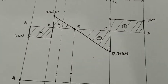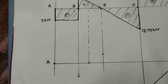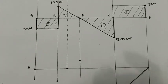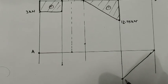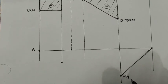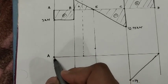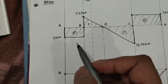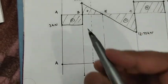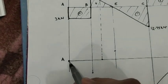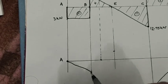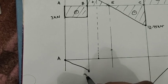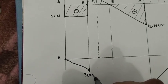Writing in the bending moment values: the bending moment at C is minus 14 kNm (plotted downward). The bending moment at A was 0. The bending moment at B was minus 3 kNm. Since the shear force line between A and B is horizontal, the bending moment line between these points will be an inclined straight line, reaching minus 3 kNm at B.